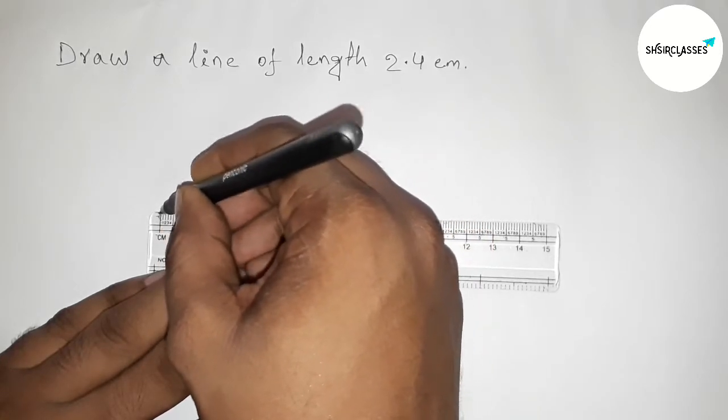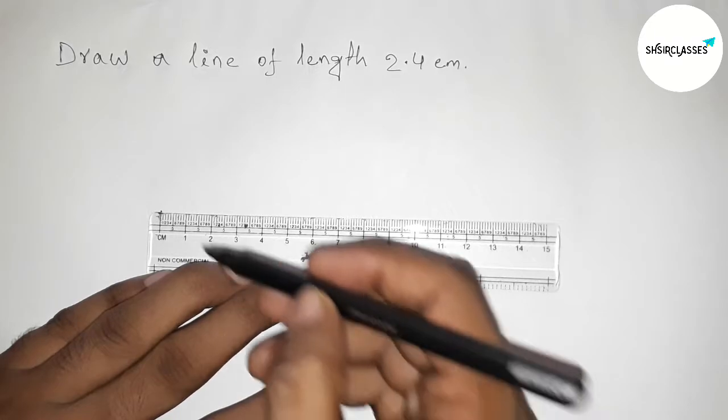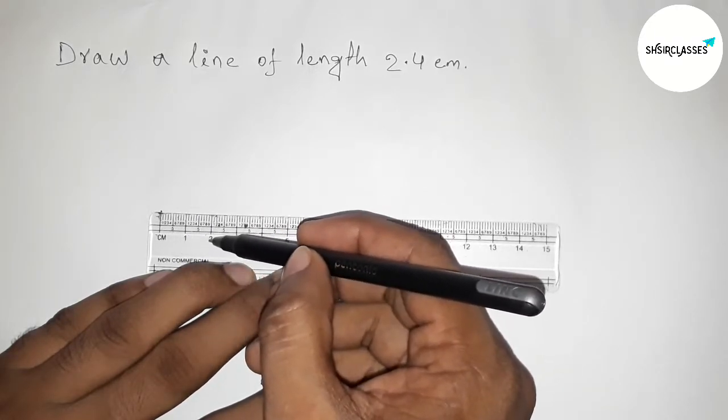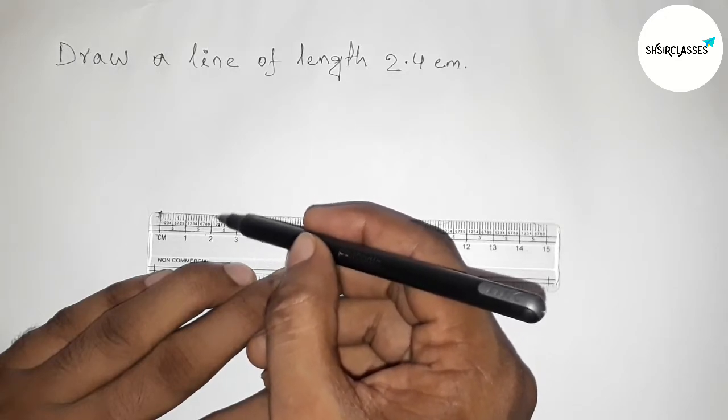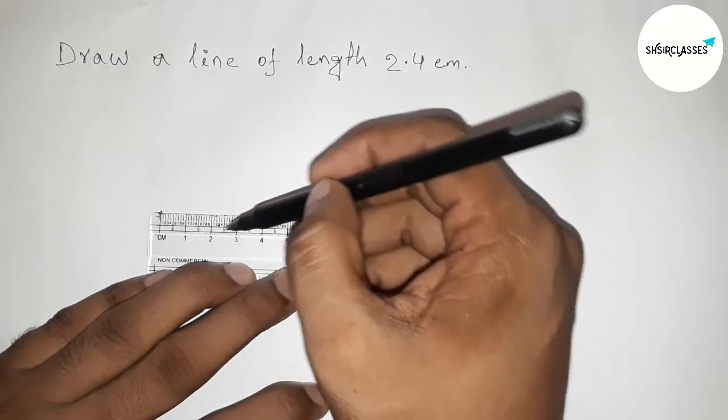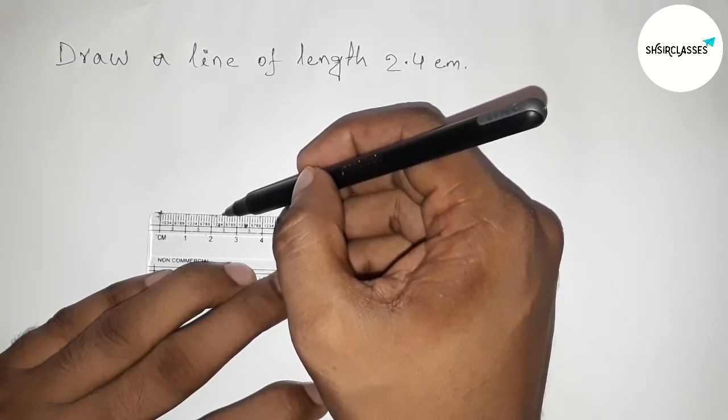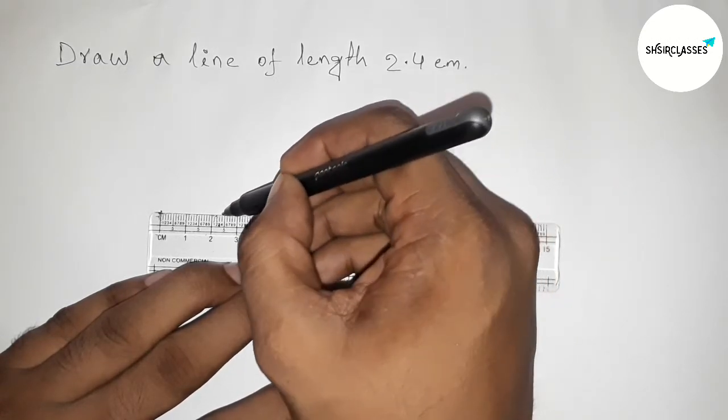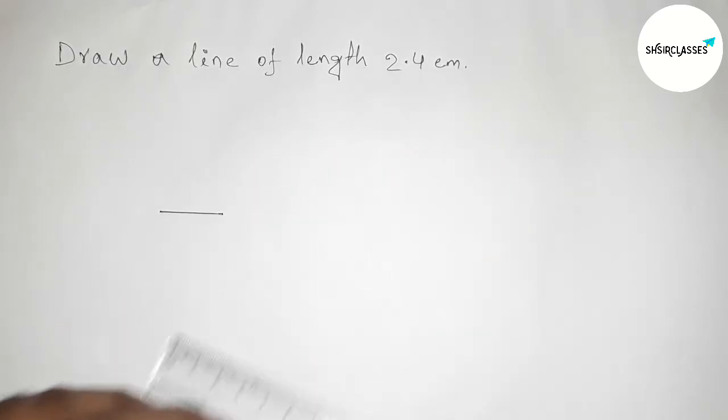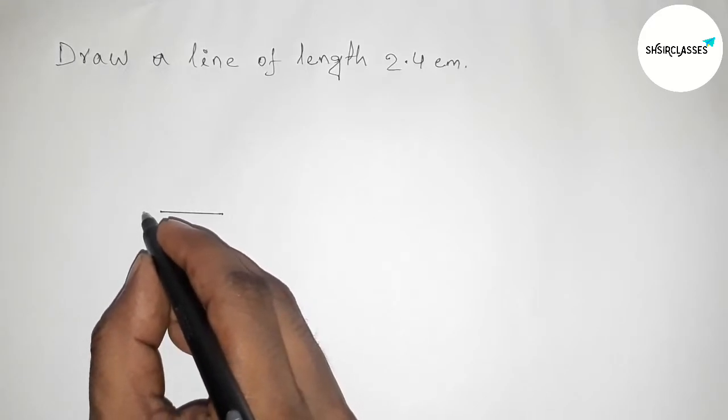And now counting, so this is one centimeter, and this one two centimeter. And now counting 2.4, so this is one, two, three, four. So this is 2.4 centimeter, so marking here and joining this.